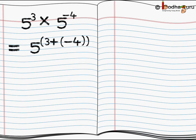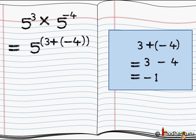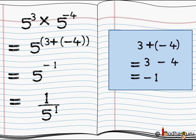Now we have five to the power three multiplied by five to the power minus four. The bases are the same, so just add the exponents: three plus minus four equals three minus four, which equals minus one. So the answer is five to the power minus one. This can be written as one divided by five to the power one, which is equal to one divided by five.